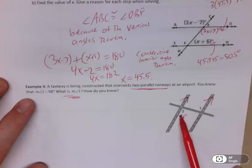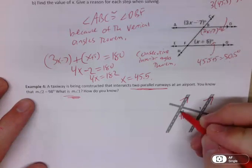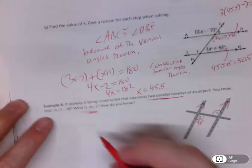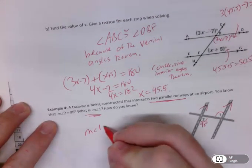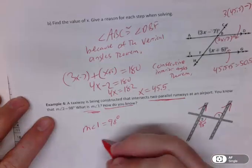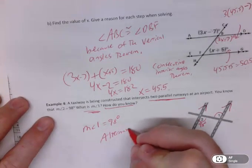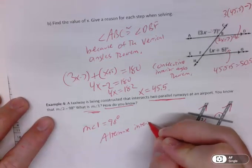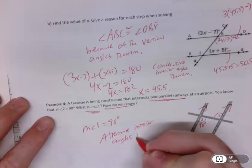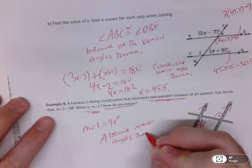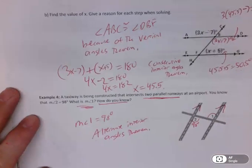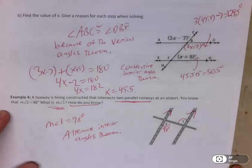Those two are alternate interior, and alternate interior angles must be congruent. So this angle is congruent to that angle. So the measure of angle 1 is 98 degrees. How do I know? Because of the alternate interior angles theorem. And that's basically how you do it.